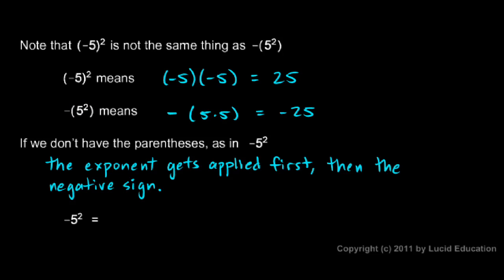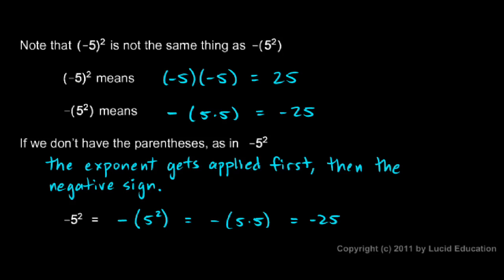If you have parentheses, the parentheses always tell you which one gets done first. But if you don't have parentheses, you have to pay attention to the order of operations. There's a specific rule: the exponent gets done first before the negative sign. So negative 5 squared means negative, and we do the exponent first — 5 squared — so that's negative times 5 times 5, which is just negative 25. Note that in this case we have a single negative sign. If the negative sign is in the parentheses and that's being squared, then we have two negative signs. But down here, the 5 is squared — it's not a negative 5 that's squared — so this is just a single negative sign attached to that 5 squared.